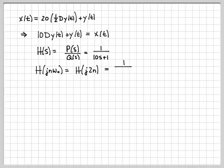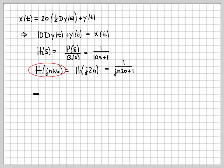What do I care about? I care about the quantity transfer function evaluated at jn·ω₀. In this particular example, ω₀ is equal to 2. So jn·ω₀ is actually j2n.